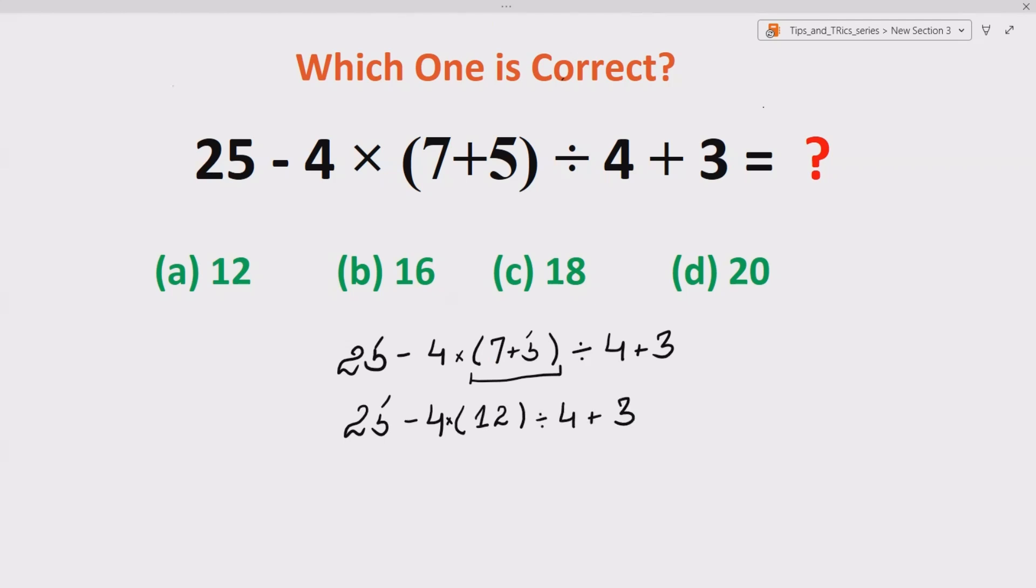Now here you can see we have both division and multiplication in our expression. So what we have to actually do is going from left to right. From left to right, we see 25 remains as it is, minus 4 multiplied with 12. So we do that expression first. So 4 multiplied with 12, it gives us 48. So we have 25 minus 48 divided by 4 plus 3.